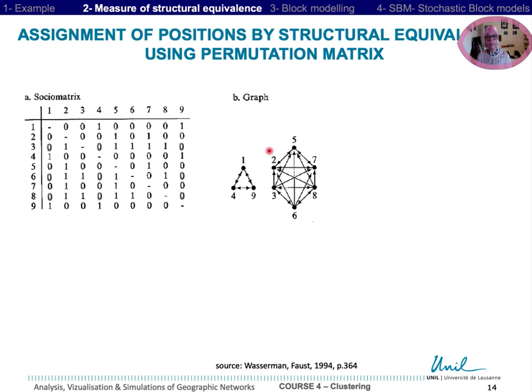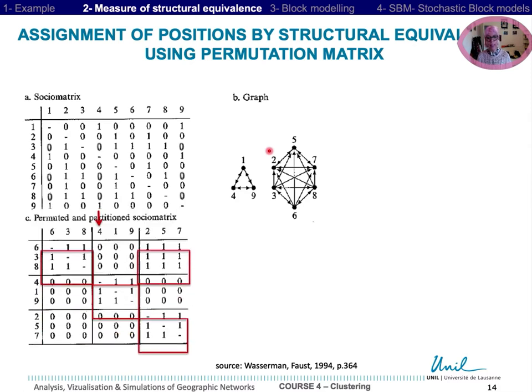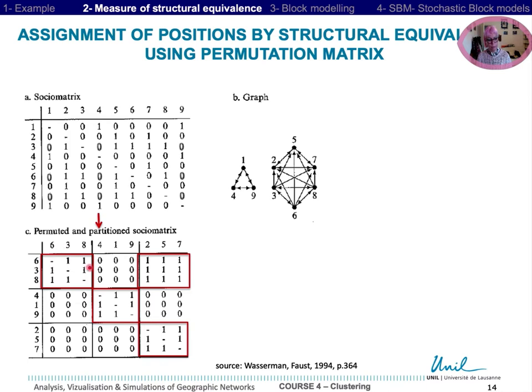Through permutation of rows and columns, one can associate nodes sending or receiving similarly to other nodes. Matrices classifying positions by blocks are useful ways to summarize some kinds of ties between positions.